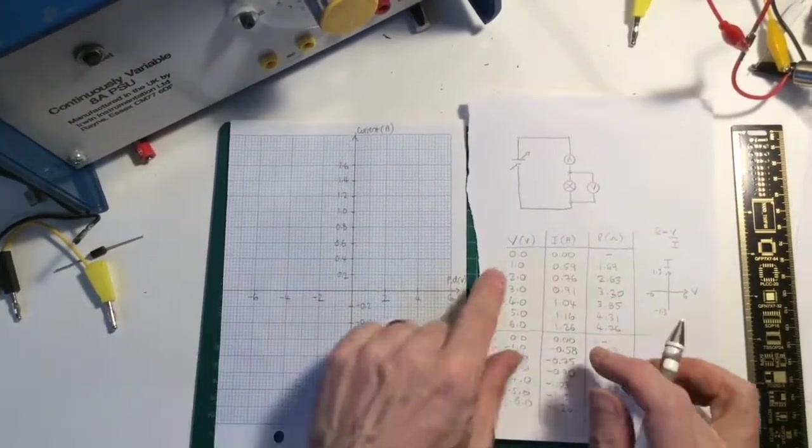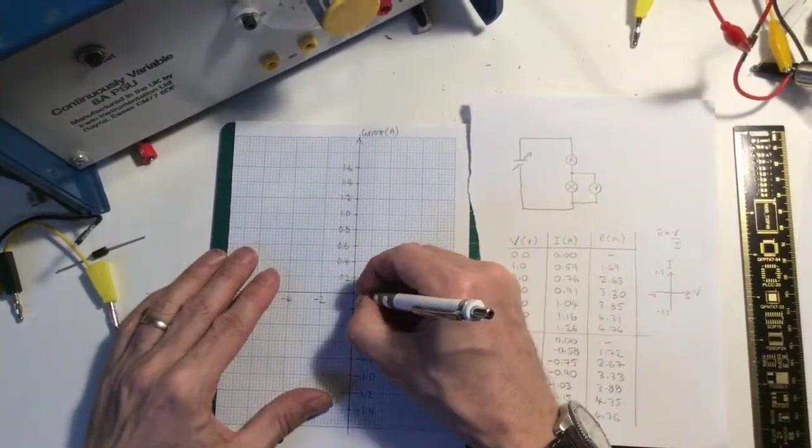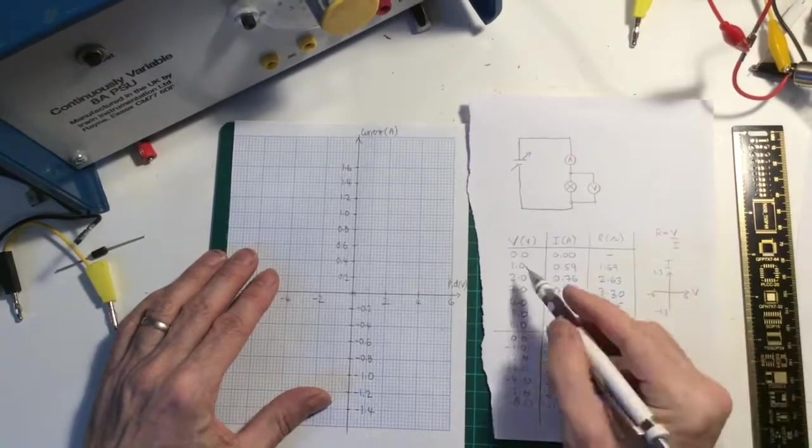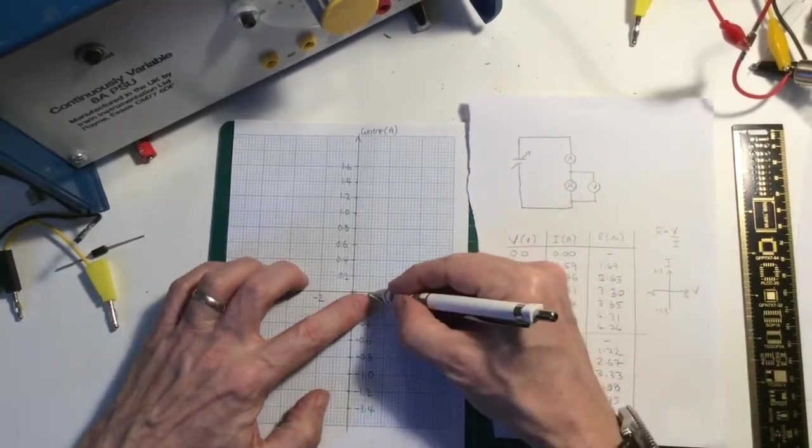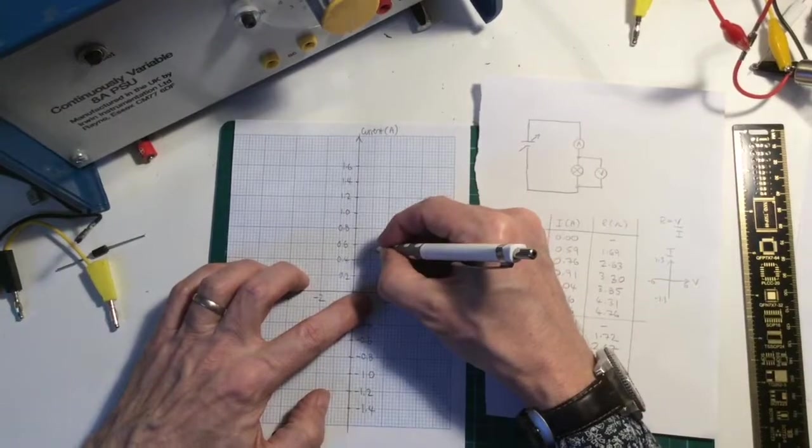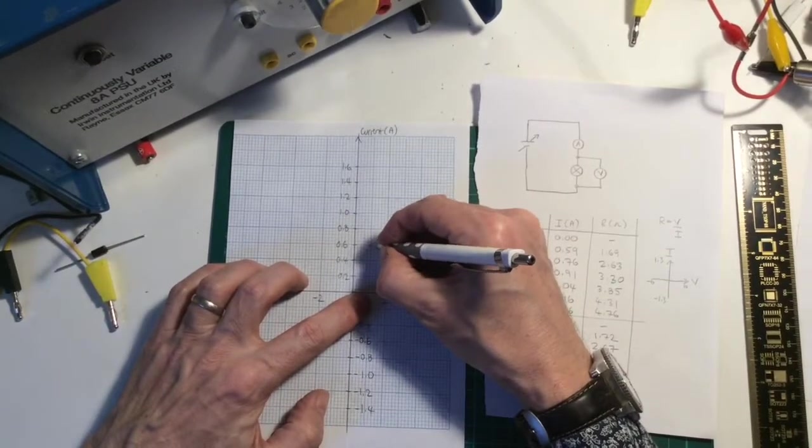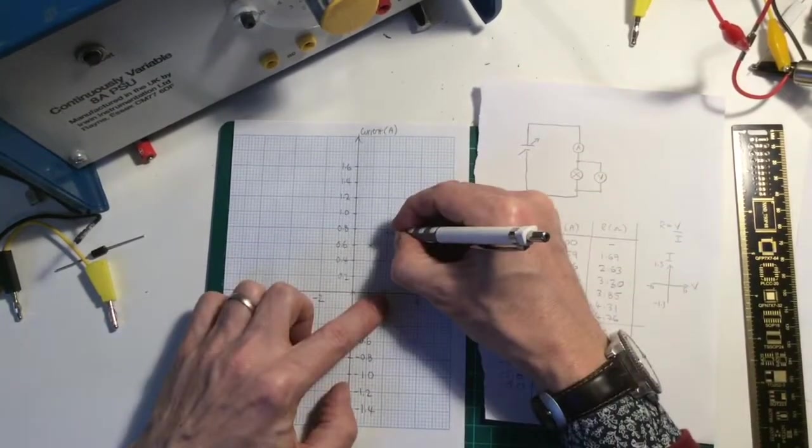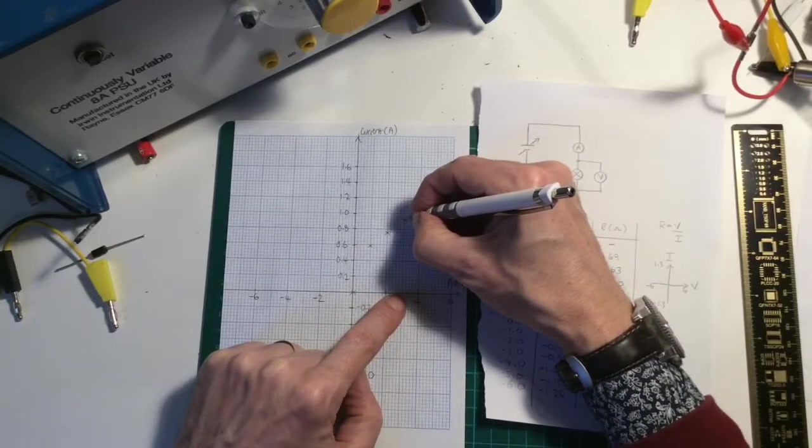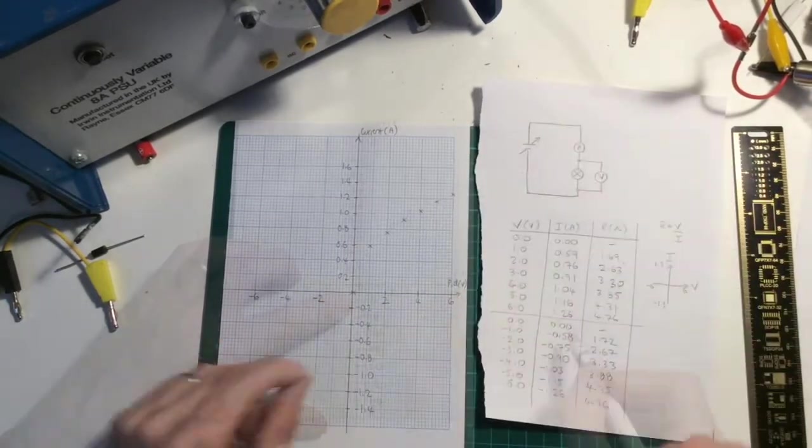Right, let's start plotting. Zero, zero. One volt, 0.59, it's virtually up there, about there. One, two, six, there.